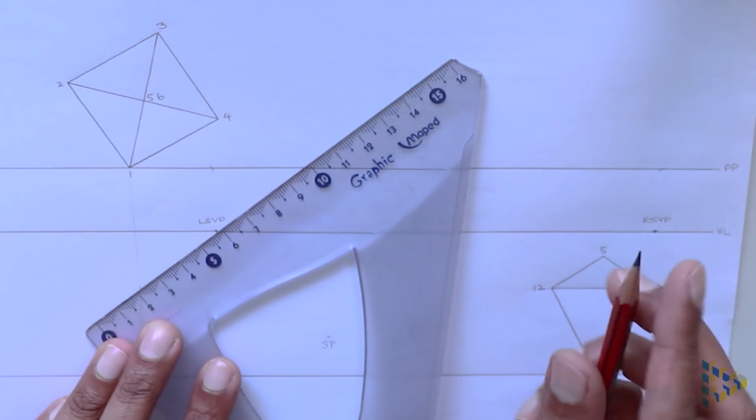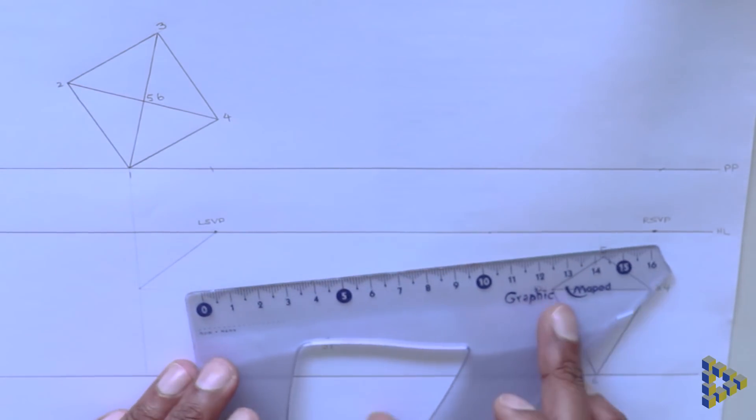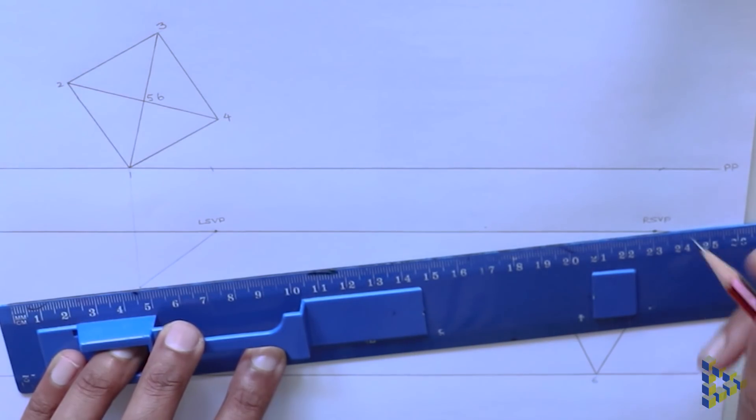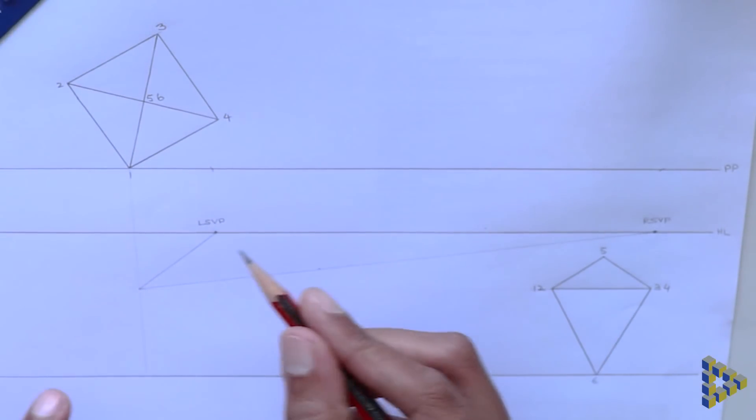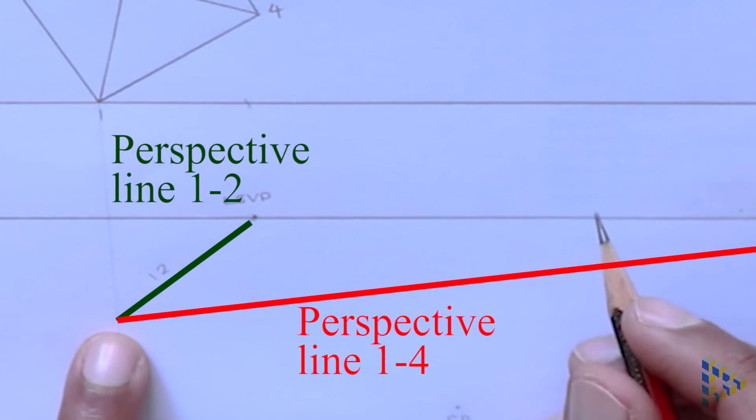Since one is next to two and four on the plan view and are at the same elevation as we can see from the side view, point two will lie on the left perspective line extending from one and point four will lie on the right perspective line extending from one.